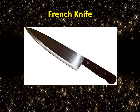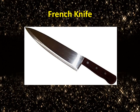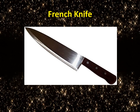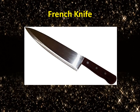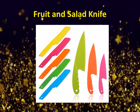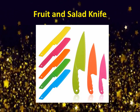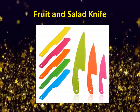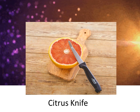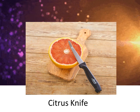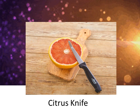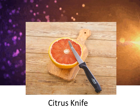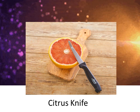Next we have a knife or French knife. It is used to chop, dice, or mince food. It is a heavy knife with a saber or flat grind. Next is the fruit and salad knife, used to prepare vegetables and fruits — usually made of plastic. Next, we have a citrus knife. A citrus knife has a two-sided blade and serrated edge, and is used to section citrus fruit.